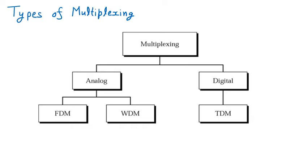We are discussing the topic multiplexing. Multiplexing means combining different signals together into one. Multiple devices sending data — that data is merged together and sent through a single medium, which is called multiplexing.